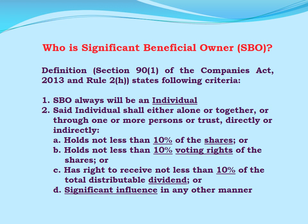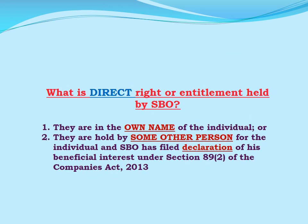Now, who is a Significant Beneficial Owner? Pursuant to section 90 subsection 1 of the Companies Act 2013 and Rule 2, a Significant Beneficial Owner will always be an individual who shall hold more than 10% of the shares or voting rights, or shall have the right to receive total distributable dividend, or shall have significant influence in any other manner on the reporting company.